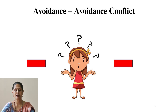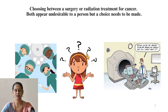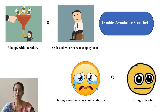Avoidance-avoidance conflict is also intrapersonal. Here, the conflict arises when an individual must choose between two equally unfavourable goals. The person is in a dilemma where any choice leads to a negative outcome causing discomfort. For example, choosing between surgery or radiation treatment for cancer — both appear undesirable, but a choice must be made. A double avoidance conflict could be experienced by someone who is unhappy with their salary but fears unemployment if they quit. Another example would be telling someone an uncomfortable truth or living with a lie.